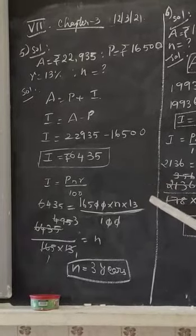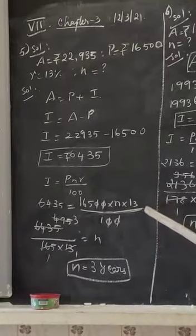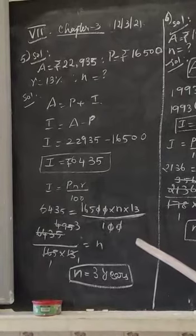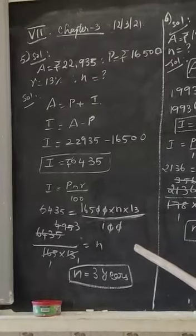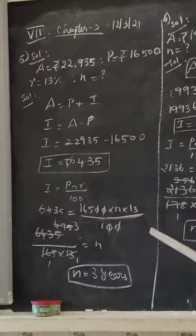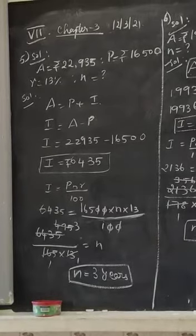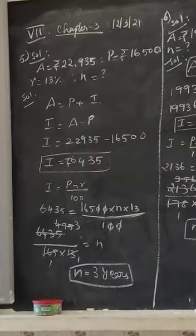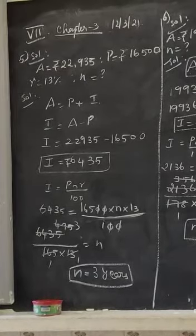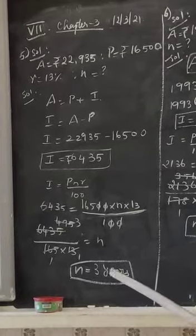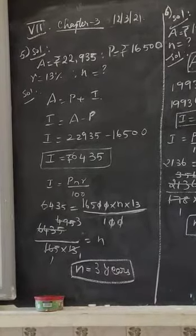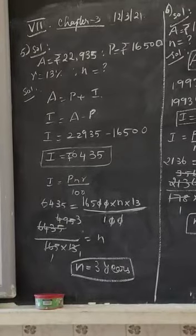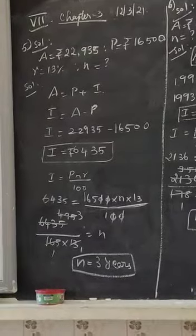Next, we find the value of n using the simple interest formula: I = PNR divided by 100. Substituting I = 6435, P = 16500, and r, then solving for n. We cancel the zeros in the numerator and denominator. To isolate n, the values 165 and 13 move to the other side as division.